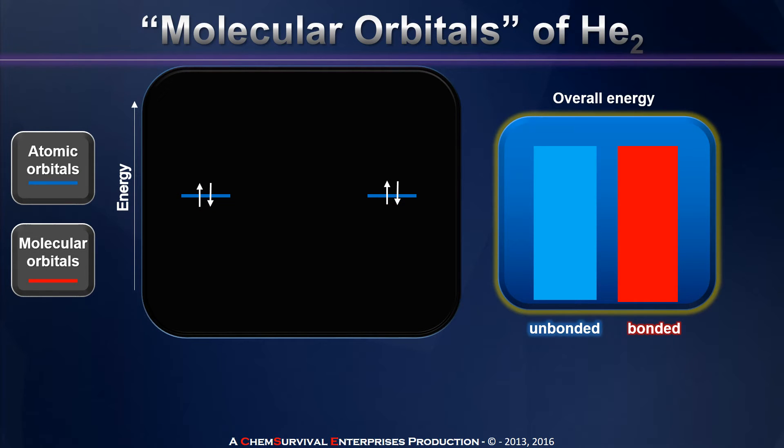Now let's move on to the next element on the periodic table, helium. Now I've put molecular orbitals here in quotations because as we're about to discover, there really is no such thing as a helium 2 molecule. But to prove it, we need to use our energy diagram and combine the two atomic orbitals of helium atoms to find out what the energetics of bonding would be if it were to happen. So let's go ahead and do that now.